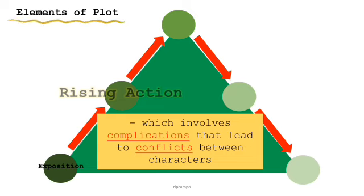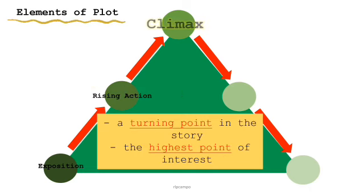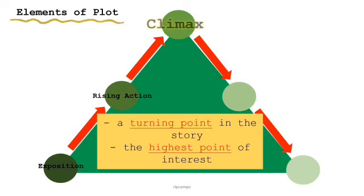The second part of plot is rising action, which involves complications that lead to conflicts between characters — this part is the beginning of conflict. After the rising action comes the climax, which is considered the turning point in the story or the highest point of interest. It is where the reader asks what will happen next, or whether the conflict will be resolved.